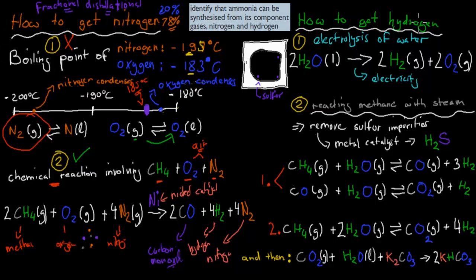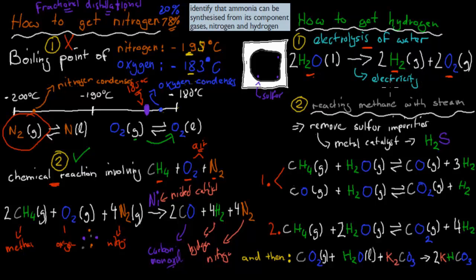Now, for producing hydrogen gas, there are also two methods. The first method is the electrolysis of water — we send electricity through water to break it up. Two moles of liquid water decompose into hydrogen gas and oxygen gas. It's a very simple reaction, but the problem is that electricity is quite expensive, requiring a lot of energy. So this first way, while possible, is not commonly used because it's too energy-expensive.